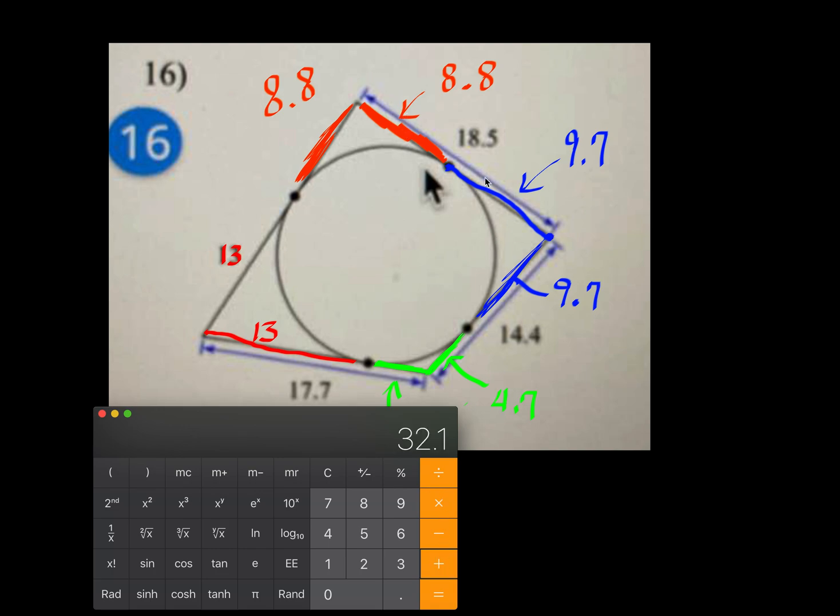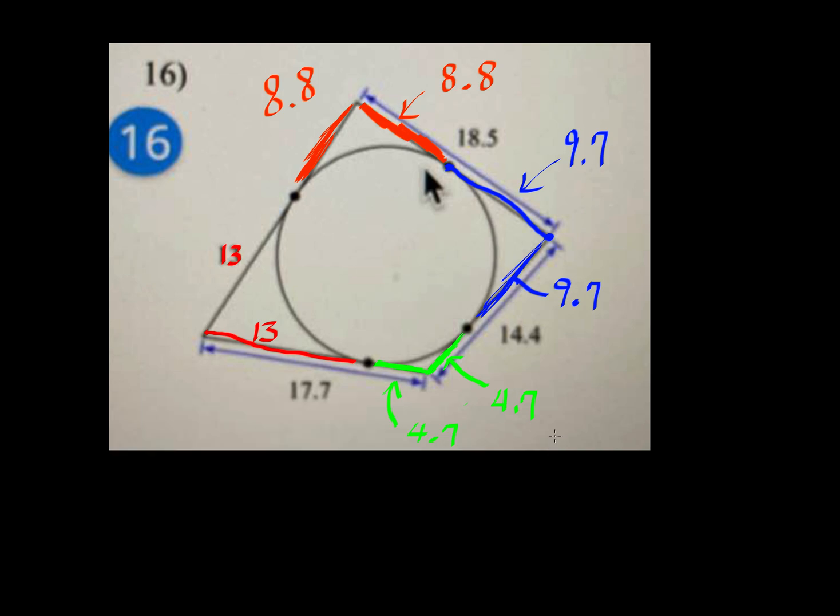And then the right top, it's 18.5. And then we have left side, it's 8.8 for that piece right there. And then bottom piece, that's 13. So the whole perimeter is 72.4. So the whole perimeter, 72.4 units.